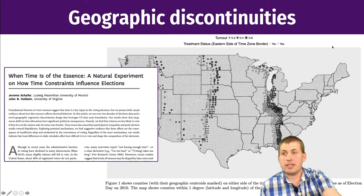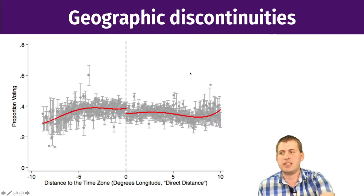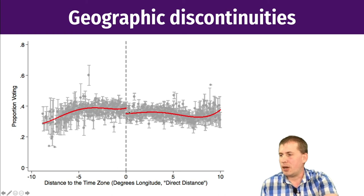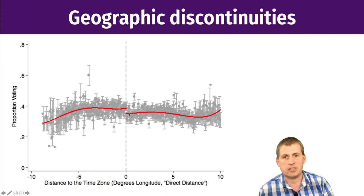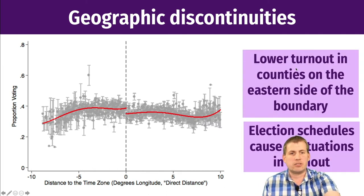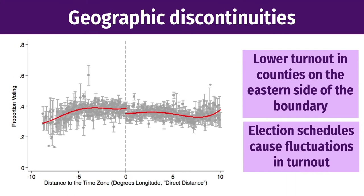Not surprisingly, they found a difference — there's a gap they care about. Districts on the east side of the time zone boundary had lower average voter turnout than districts on the west side. The researchers concluded that election schedules cause fluctuations in turnout, meaning having more time in the day makes it more likely that you will vote and increases voter turnout. The implication is that longer voting periods give more people the opportunity to reach polling stations — and they were able to measure this causally using regression discontinuity.